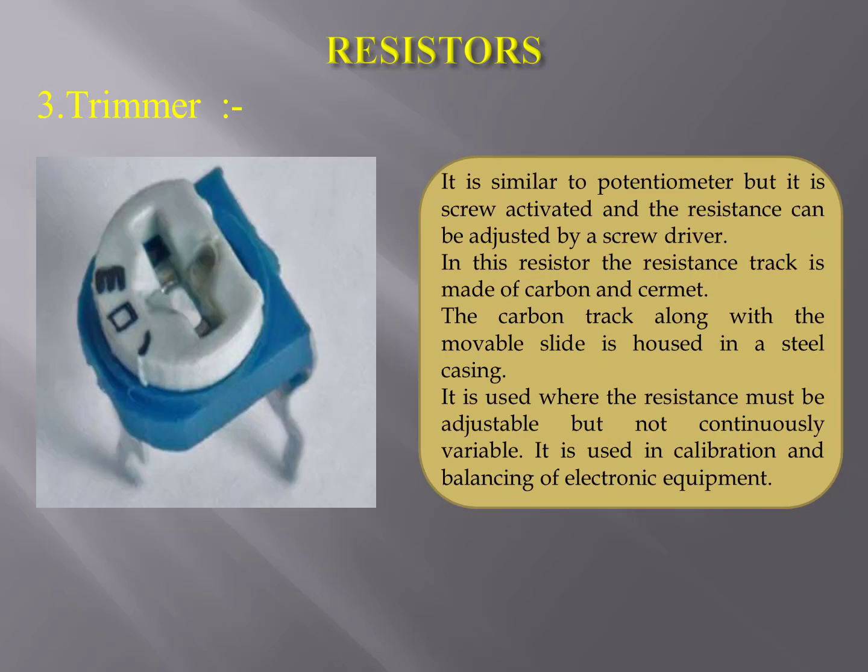Trimmer: it is similar to a potentiometer but is screw-activated and the resistance can be adjusted by a screwdriver. The resistance track is made of carbon and ceramic, housed in a steel casing. It is used where the resistance must be adjustable but not continuously variable, such as in calibration and balancing of electronic equipment.